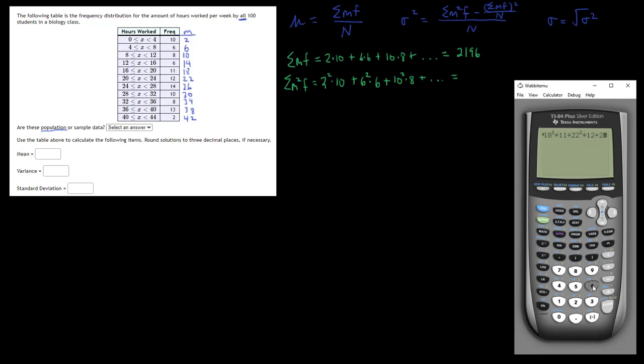Plus 30 squared times 10, plus 34 squared times 8, plus 38 squared times 13, plus 42 squared times 2. Enter. 61,616.